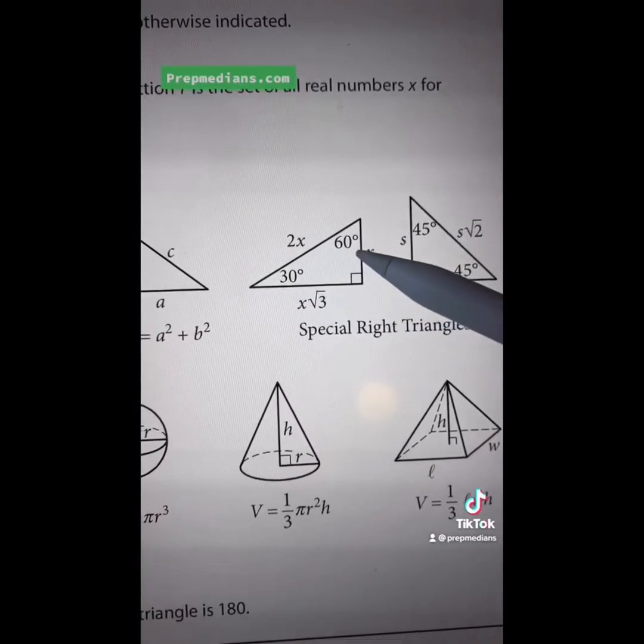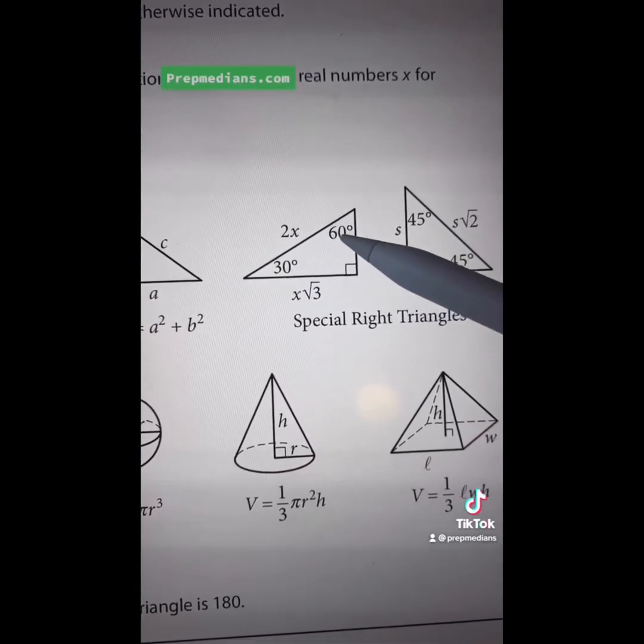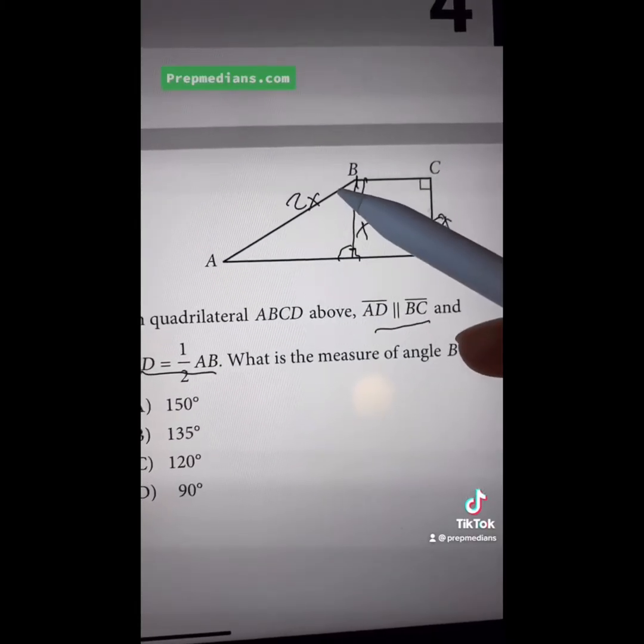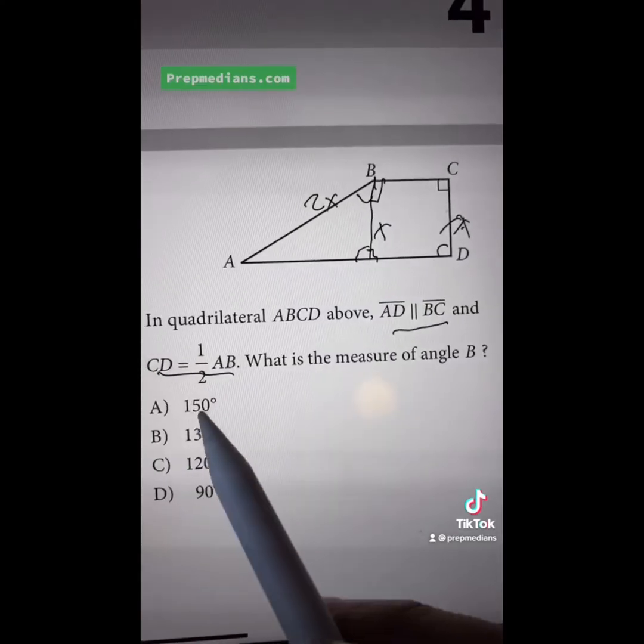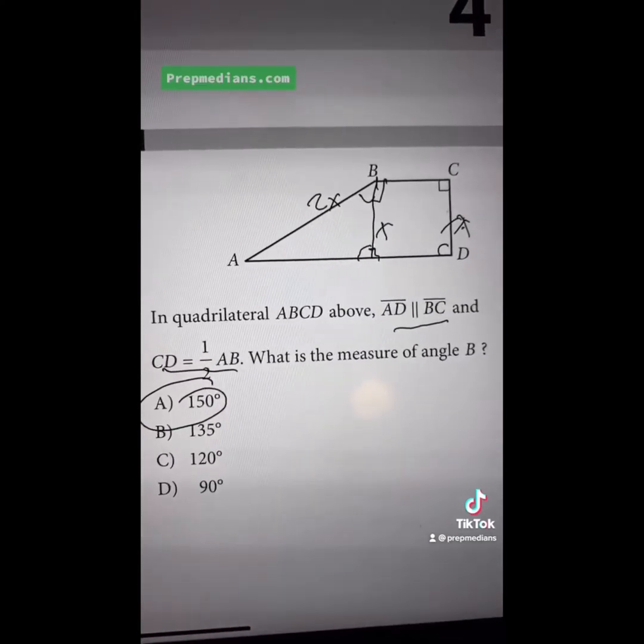X, 2X, that tells us that the triangle we just saw has a 60 degree angle up here. So if this is 60 degrees and this is 90 degrees, together they are 150 degrees, which is our answer A. Boom, crush it prepsters.